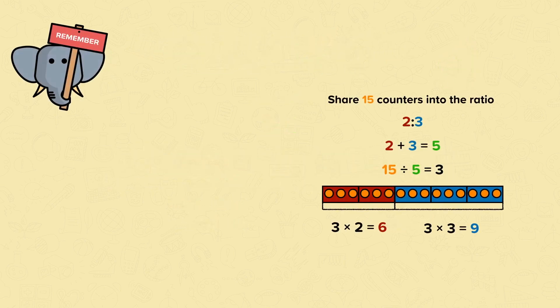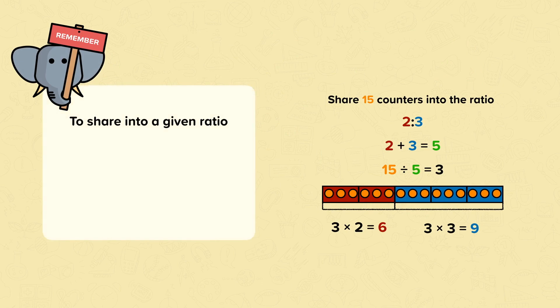Remember, to share into a given ratio: first, find the total number of parts. In this case, 2 plus 3 equals 5.